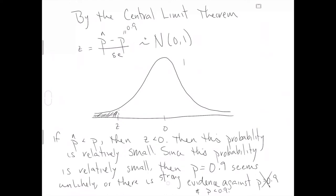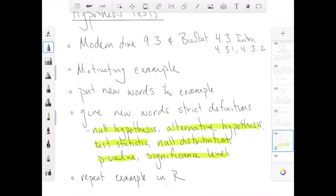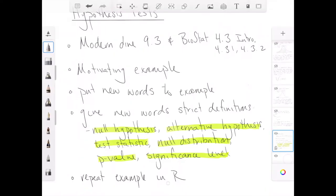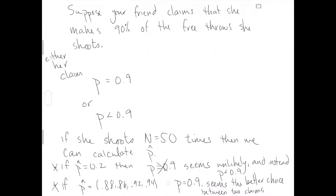This is my best attempt to show you this process in a relatively straightforward way. What we've done is avoided all of these formal words, because these words outside of a particular example are difficult to understand. So what I'm going to do next is put these new words to the example, in order: null hypothesis, alternative hypothesis, test statistic, null distribution, p-value, and significance level.